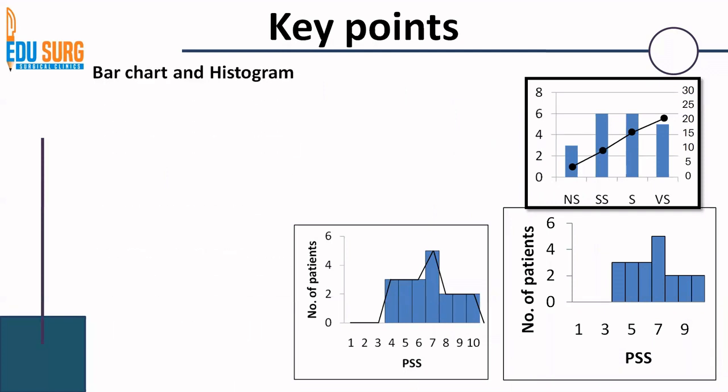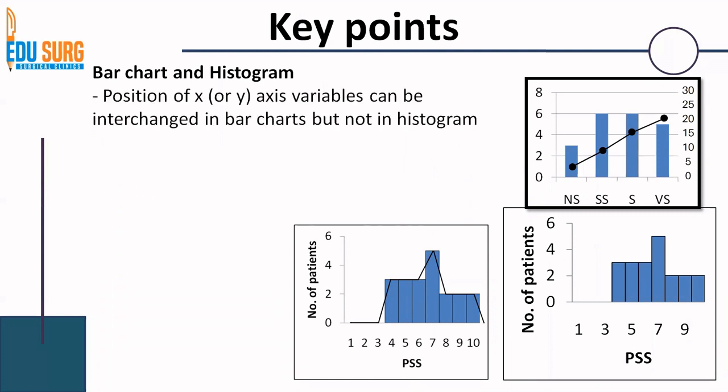First then, the important points that we have discussed is the difference between the bar chart and the histogram. That is the x and y-axis variables can be interchanged in bar chart but not in histogram and there is gap between the bars of a bar chart but there is no gap between the bars of a histogram.